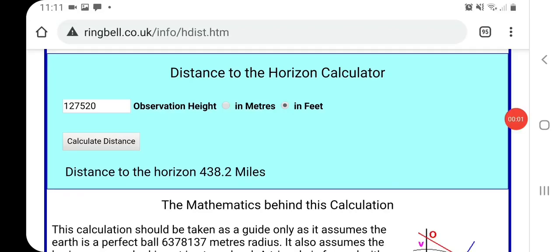So how far away is that horizon from Felix in the heliocentric model? Well, according to the globe maths, I put in the observation height, Felix's height, and according to the globe maths it's 438.2 miles away. So we've got that as a reference.